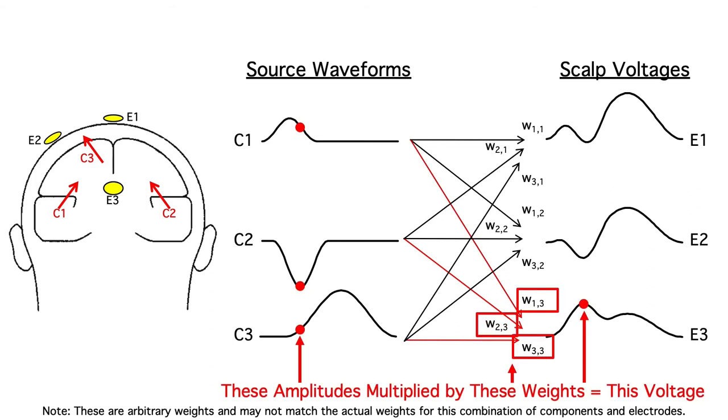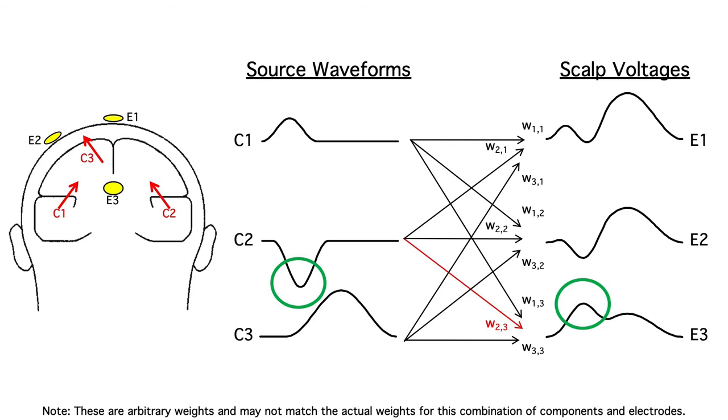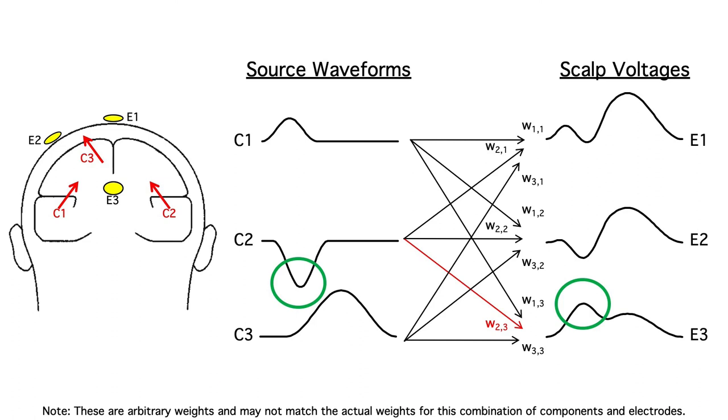The contribution of a given source to a given electrode site at a given time is simply the amplitude of the source waveform at that time multiplied by the weight between that component and the electrode site. Some of the weights may be negative, which just means that the electrode is on the opposite side of the dipole. In this example, there's a negative weight from component two to electrode three, so even though the source waveform is negative going, you see a positive going deflection at that time in the scalp voltage. Any given electrode picks up a large number of different components. In this example, all three components contribute significantly to the voltage at all three electrodes.